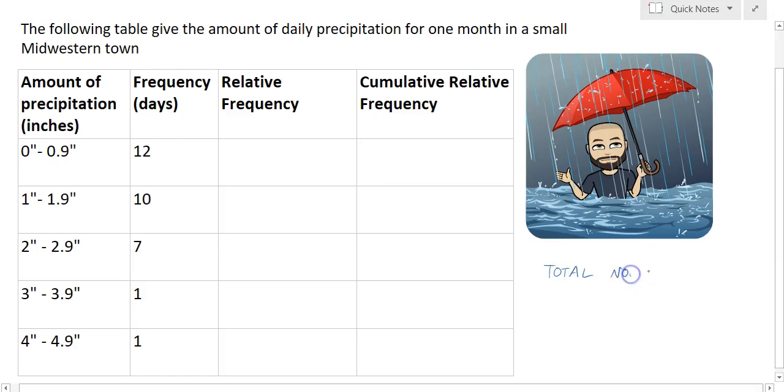So in this case I need the total number of days counted for in this data. The total number of days would be 12 plus 10 plus 7 plus 1 plus 1, so the total number of days here is 31. This is one of our months with 31 days, but we need to make sure we know the total.